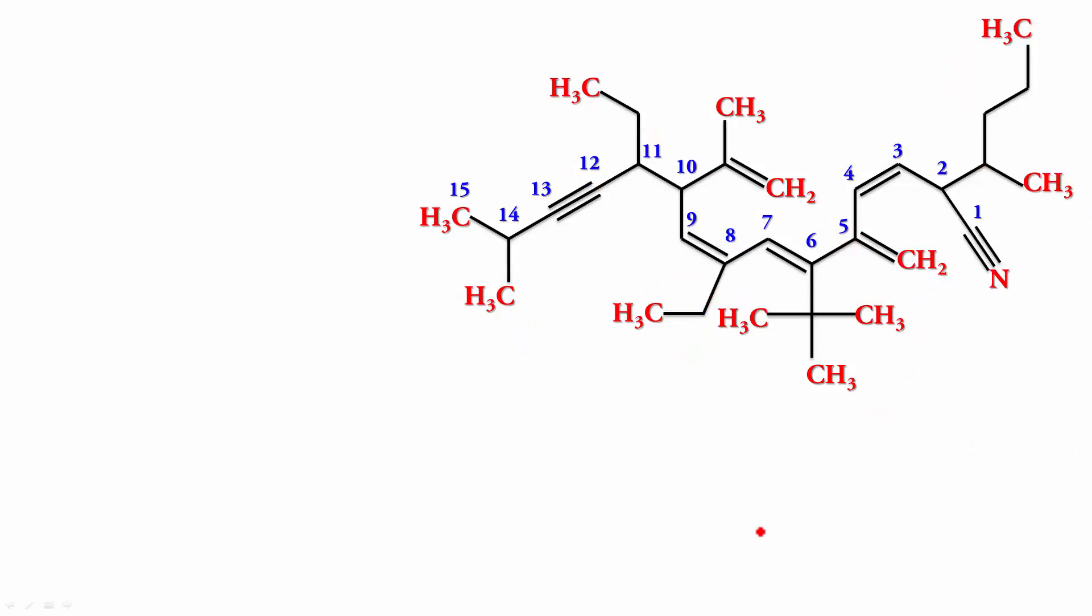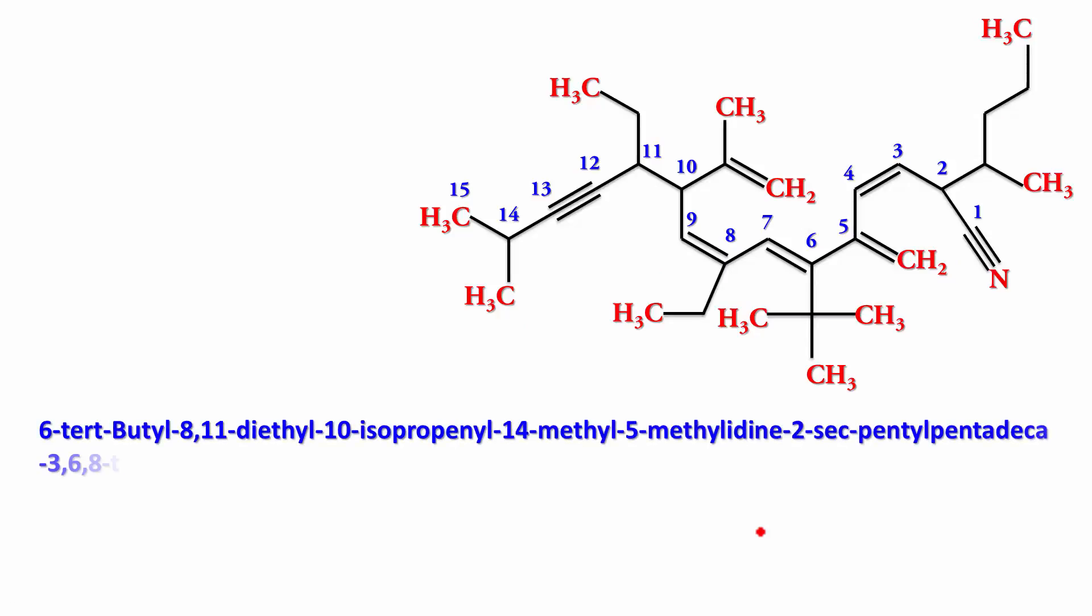So the name becomes 6-tert-butyl-8,11-diethyl-10-isopropenyl-14-methyl-5-methylidine-2-secondary pentel pentadeca 3, 6, 8, trien, 12, yn, nitrile. So pretty lengthy name here. But that is the way it has to be named.